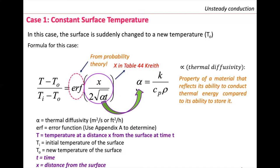Alpha is the thermal diffusivity, defined as K over (Cₚ × ρ). It is a material property that reflects the ability to conduct relative to its ability to store thermal energy — conduction versus storage. Use Appendix A, Table 4-4 in the textbook to determine the error function. T is the temperature at distance x from the surface at time t; Ti is the initial temperature; T₀ is the new surface temperature.